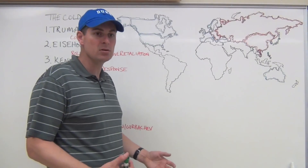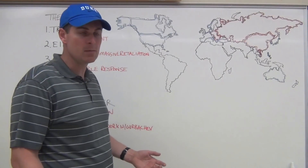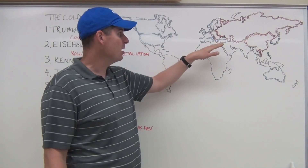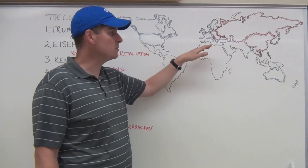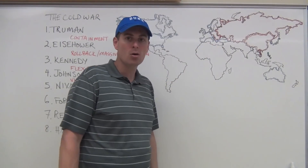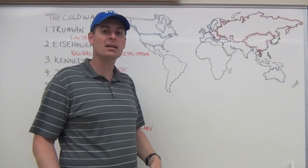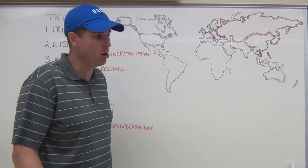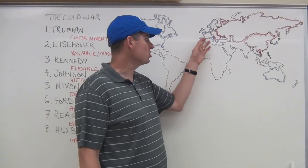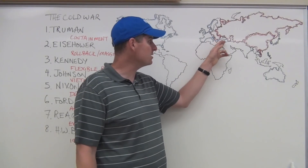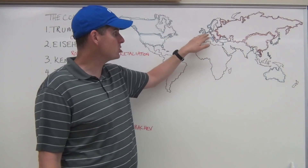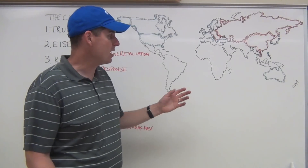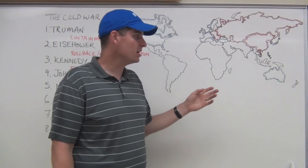Truman is going to institute the Marshall Plan, which is financial assistance for non-communist countries. He's also going to introduce the Truman Doctrine, specifically to help Greece and Turkey, which had communist insurgents actively trying to take over their governments, supported and funded and armed by the Soviet Union. NATO and the Marshall Plan are to the aid of Western Europe to shore them up and help them out.